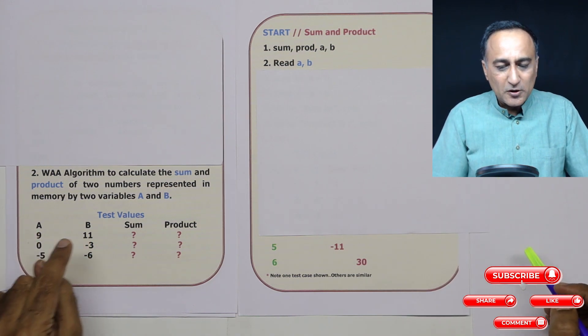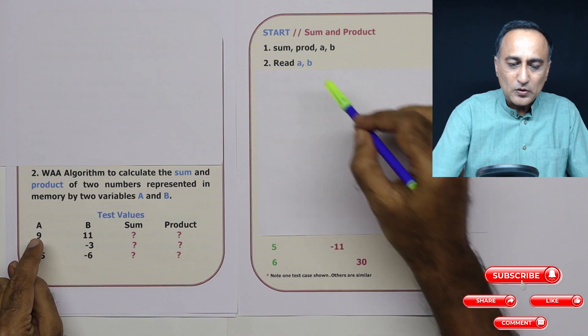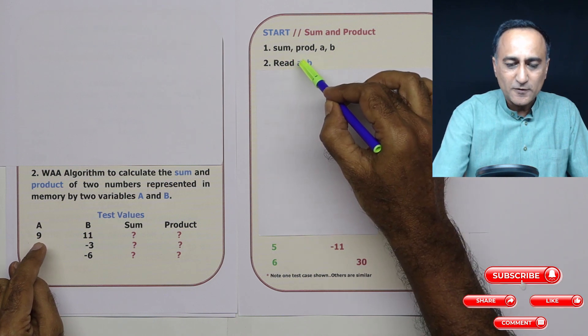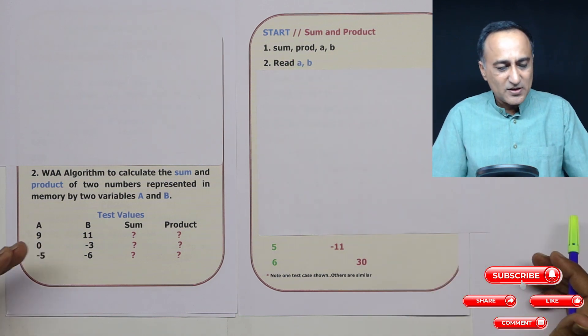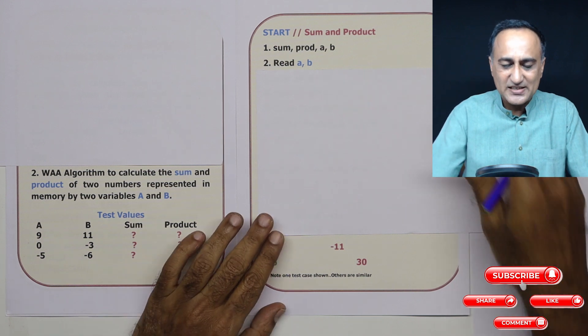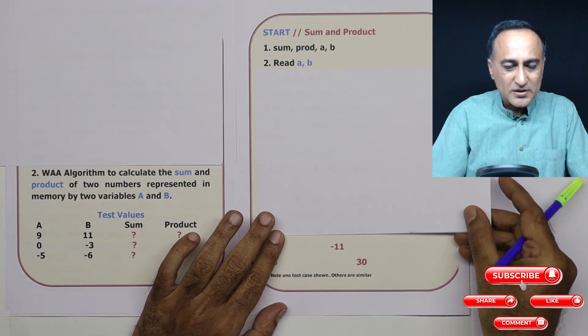To calculate A times B or A plus B, I need to ask the user to enter the values of A and B. Let's say the user enters 9 and 11, just an example.